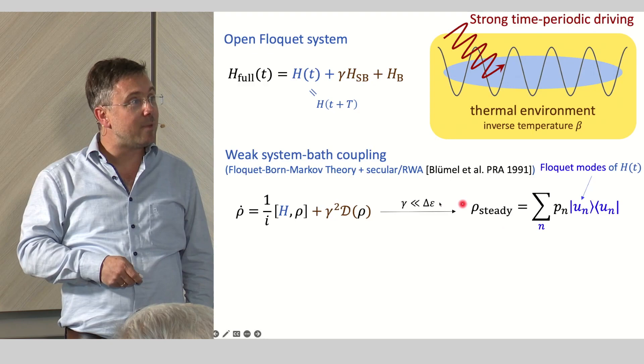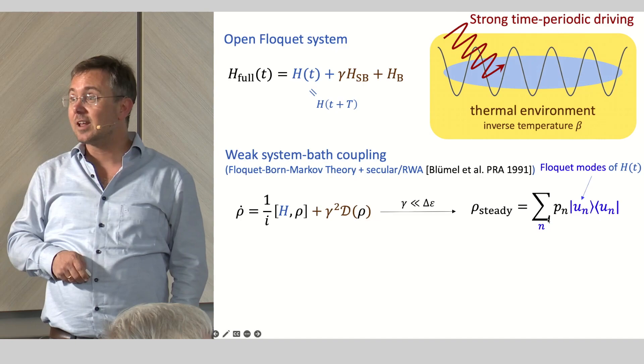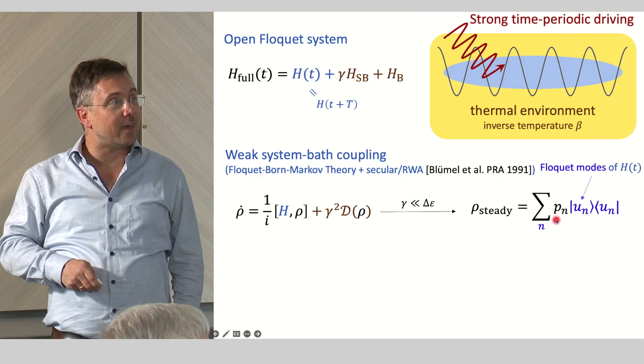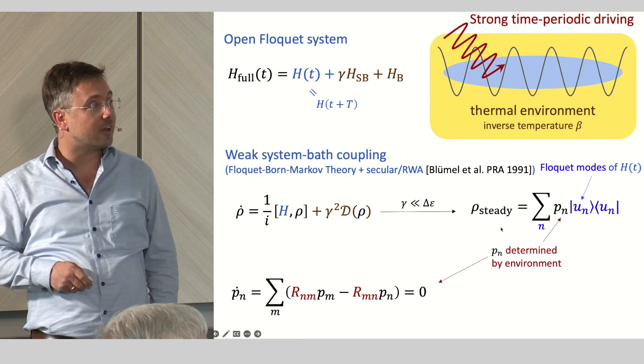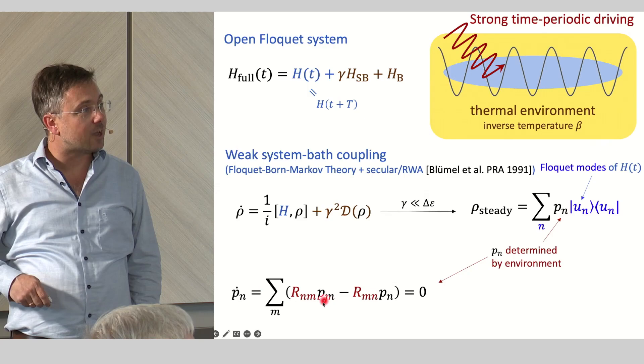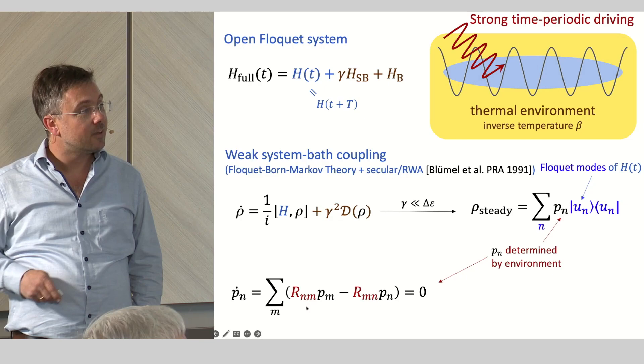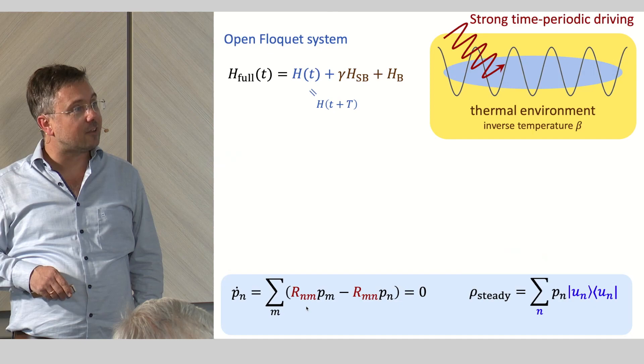Now the dissipation is still important here because, first of all, this is a mixed state with a finite entropy. So in order to reach this state, you need the dissipation. Second, these probabilities which appear here have to be determined and they are determined by dissipative processes. Namely, you can derive a master equation for these probabilities and you find some golden rule type rates that describe processes for quantum jumps between state M and state N.